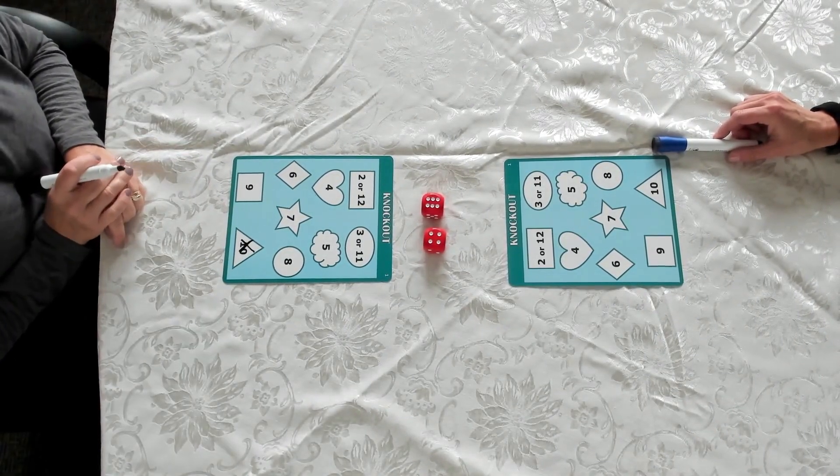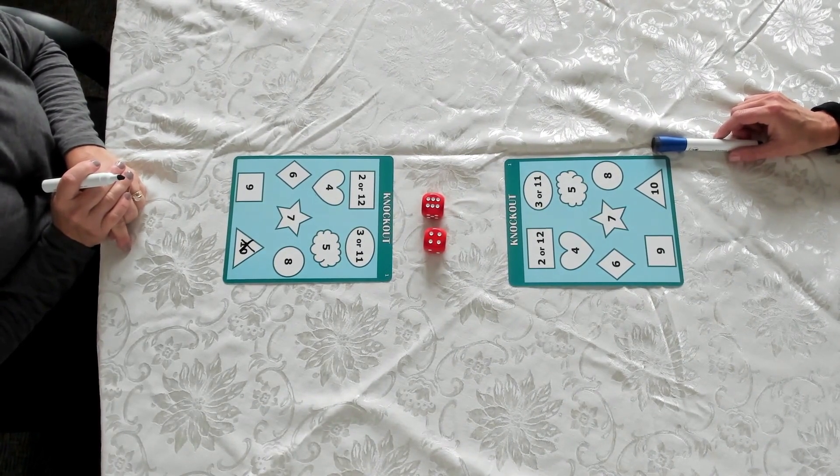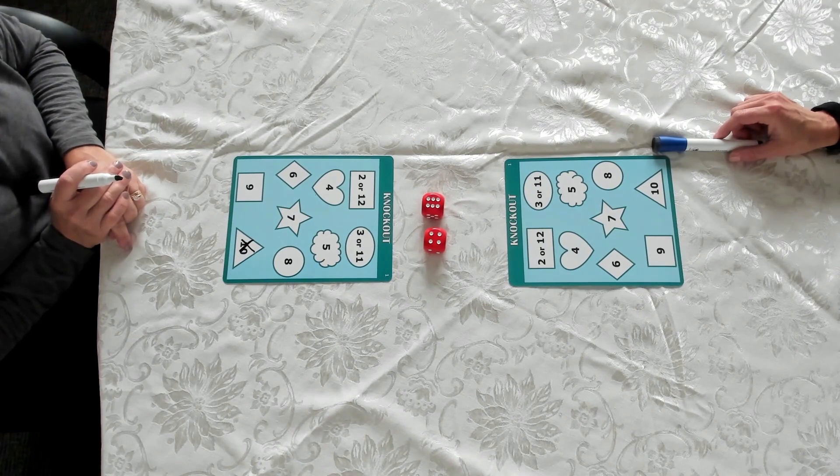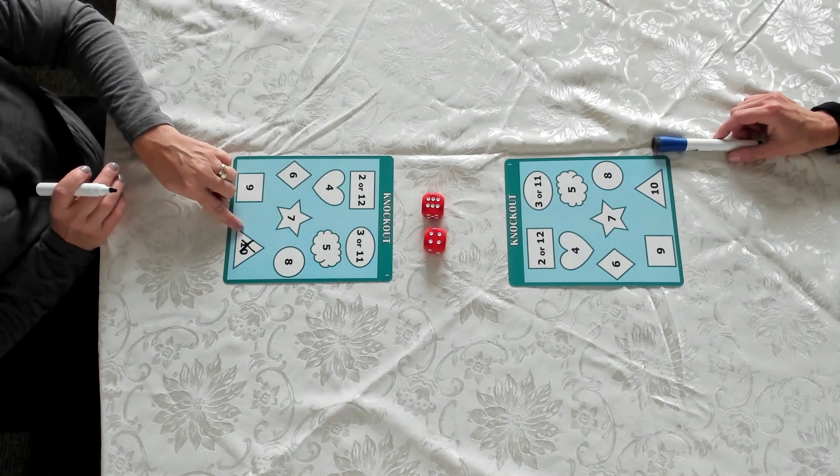Again, if they have difficulty with numbers, once the die gets rolled, you can help them with the shape in finding their number. So that's why we put shapes around each one of those.